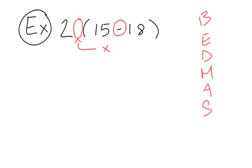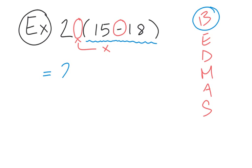According to BEDMAS, the very first thing we should look at is operations within the brackets. So let's focus on 15 subtract 18. Everything else stays the same — 15 subtract 18 is negative 3.